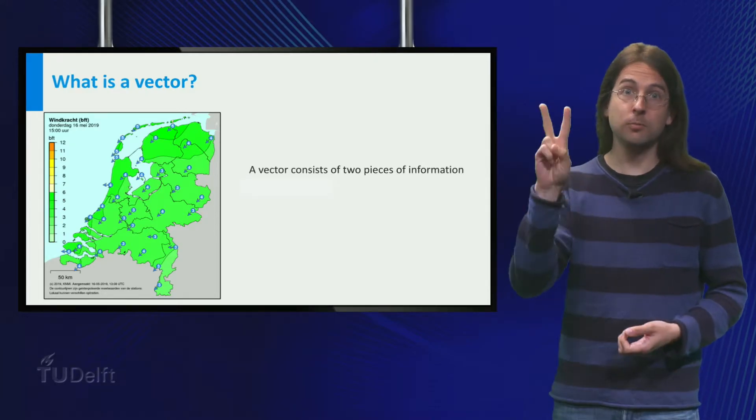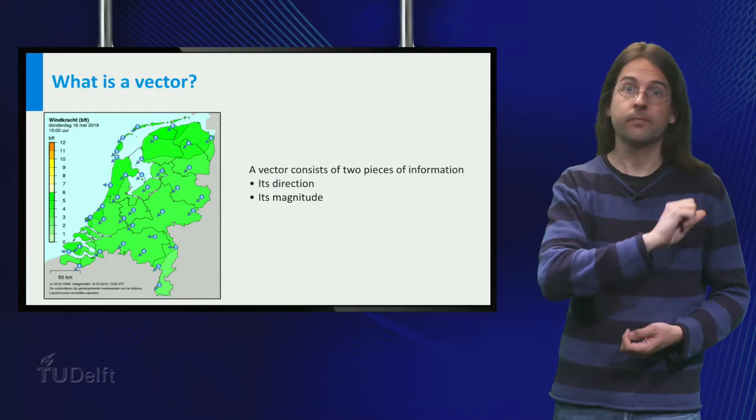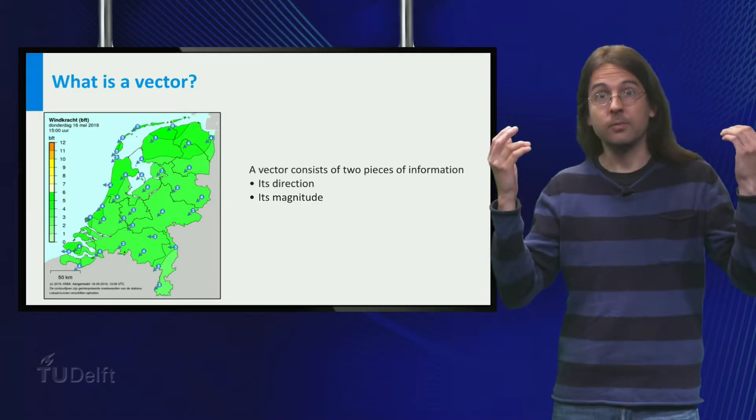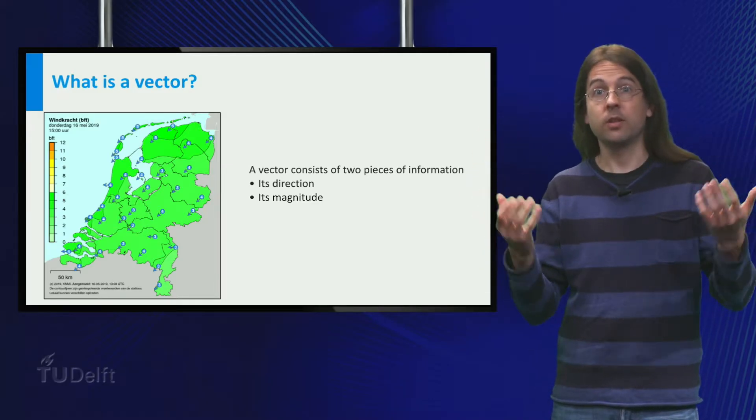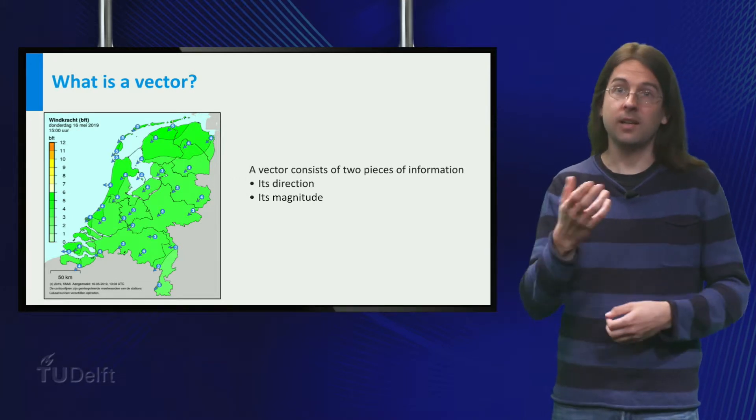A vector consists of two components, a direction and a length. You see these components in northeast 4. The direction is from the northeast, so to the southwest, and the length is 4.